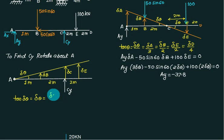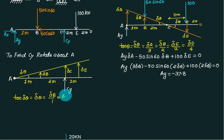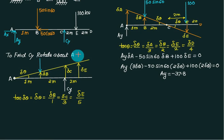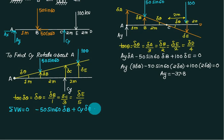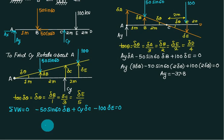Del B divided by 3, then delta divided by 4 or 5. Now at last, we have to show the forces. One force is 50 sin 60 at B — negative combination. Then C_Y into delta C is a positive combination, and minus 100 into delta E is a negative combination. Apply the principle of virtual work. Put back the values and solve — you will get C_Y.